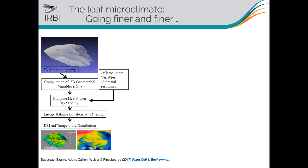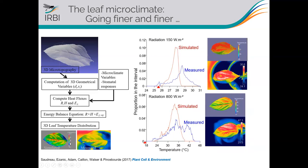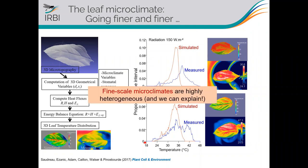This micro-topography explains most of the thermal variation we measure with the thermal camera at the leaf scale. The model is quite good at predicting where the leaf will be warmer and where cooler, although it somewhat fails to predict the absolute maximum temperature values — and we are not sure if this is a model problem or a measurement problem with the thermal camera.